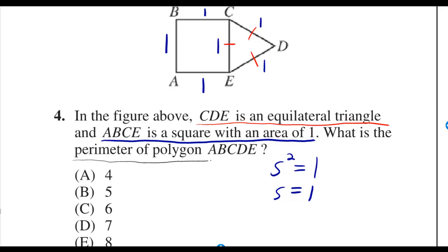And then the perimeter of polygon ABCDE are just the ones that are touching the outside, so we include everything but CE. So that's 1, 2, 3, 4, 5.